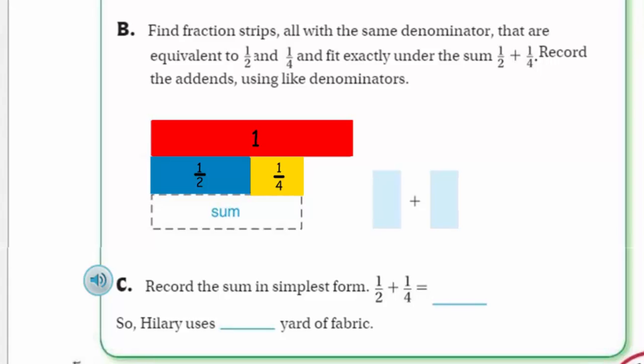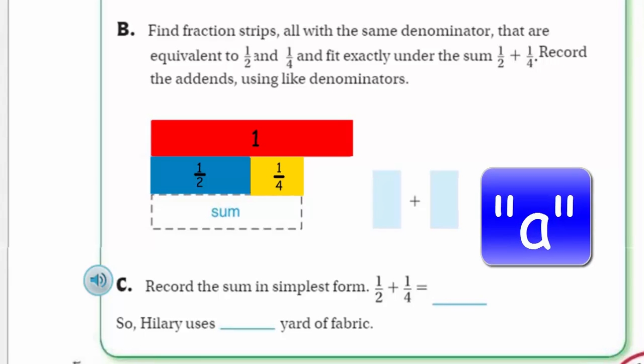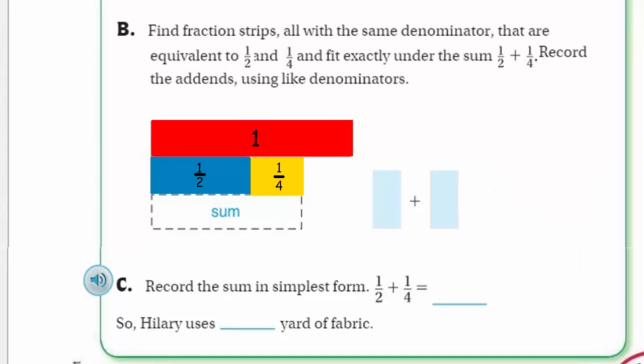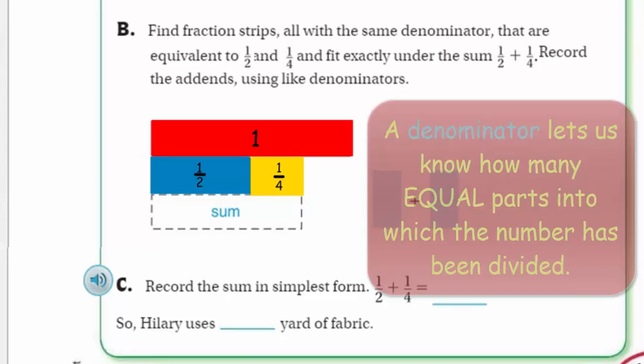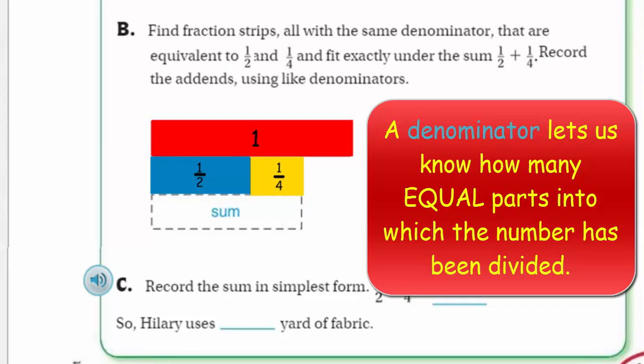We're going to begin by placing a half strip and a quarter strip under the whole strip on your math board. And this one's been done for us here in the picture. It says find fraction strips all with the same denominator that are equivalent to one-half and one-quarter and fit exactly under the sum one-half plus one-quarter. We're going to record those addends using like denominators.